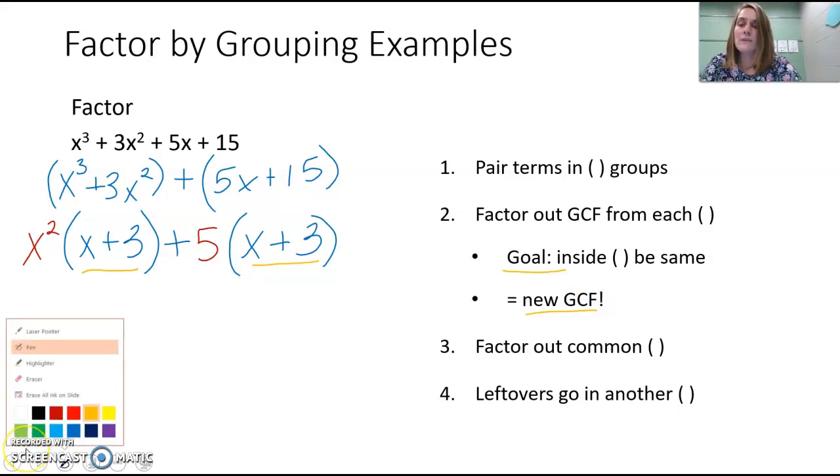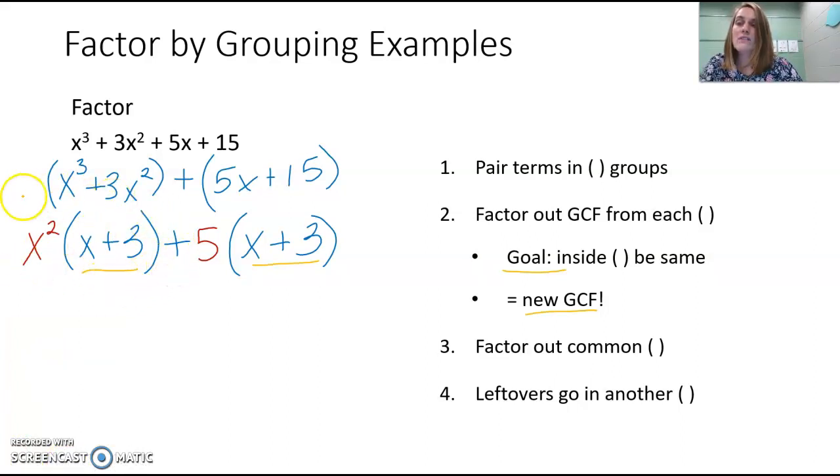Because it's like we have two different terms here. We have this first term, because all of this is multiplying together. x² is multiplying with the quantity x + 3. Our second term, 5, is multiplying with the quantity x + 3. So we can factor out that quantity, x + 3.